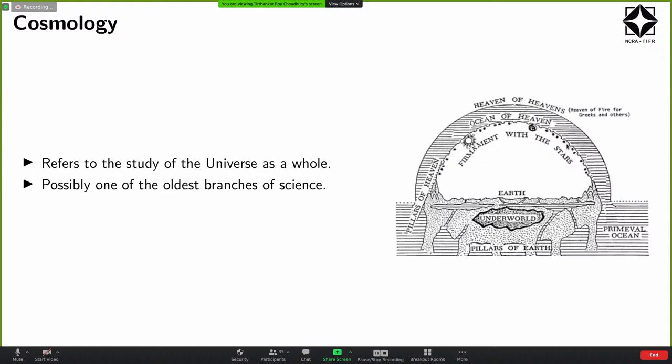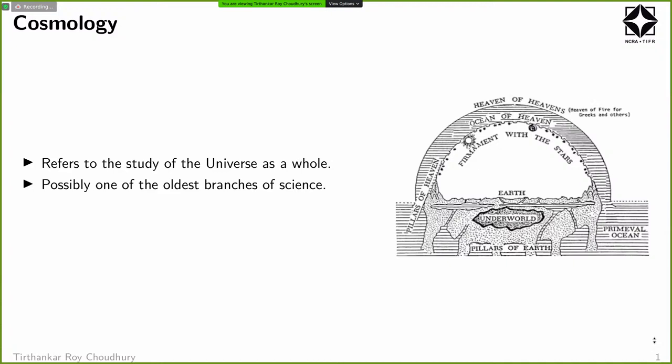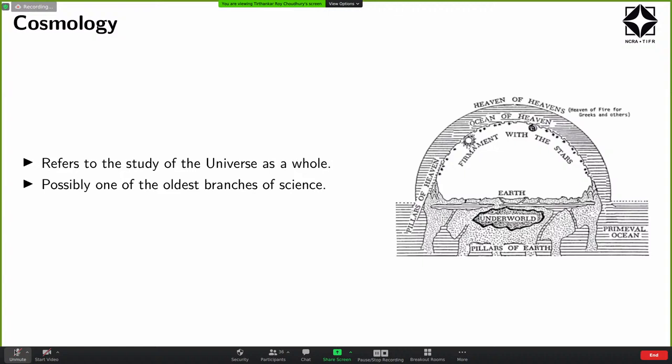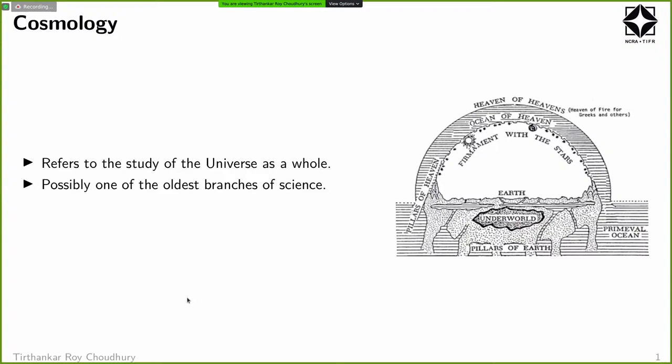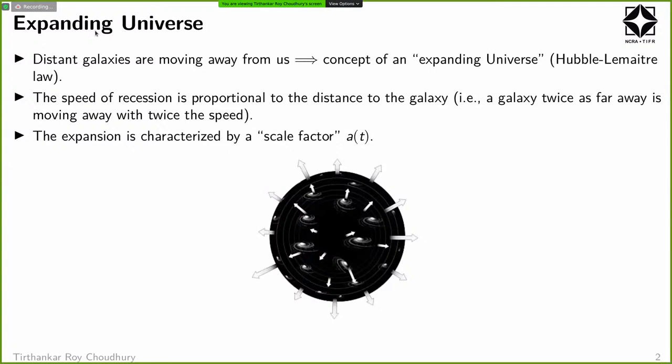Cosmology basically refers to the study of the universe as a whole. We are not really looking at small scales; we are looking at the universe as a whole, so the largest scales in our universe. It's possibly one of the oldest branches of science — various civilizations have thought about how our universe looked.